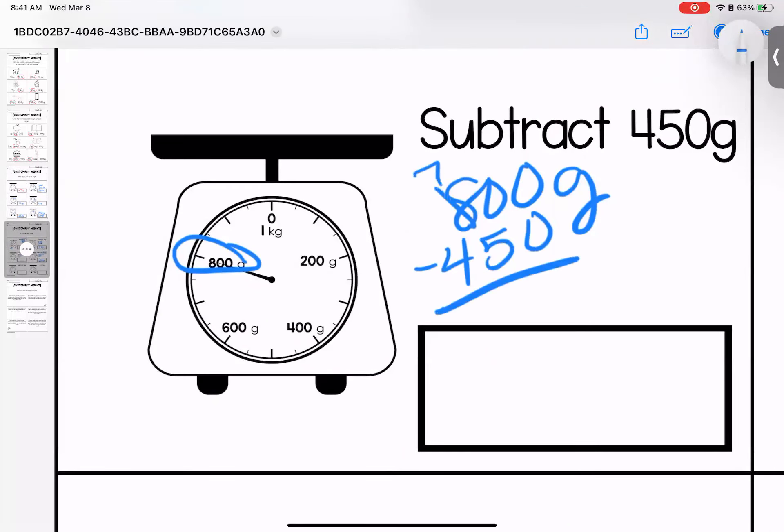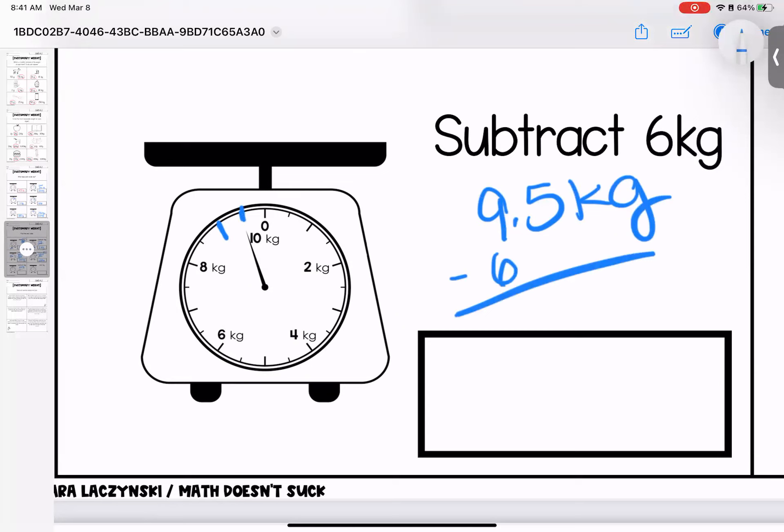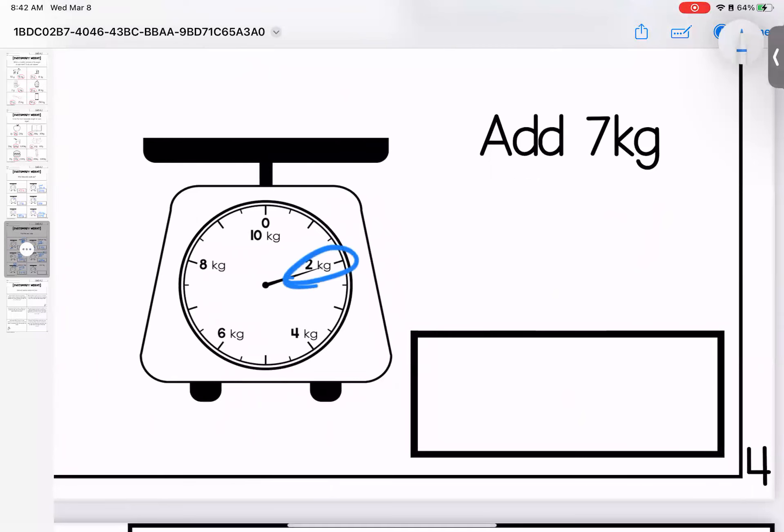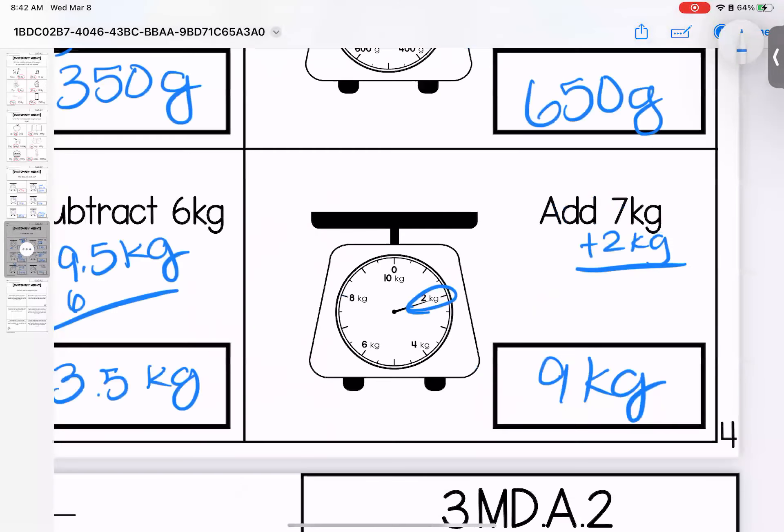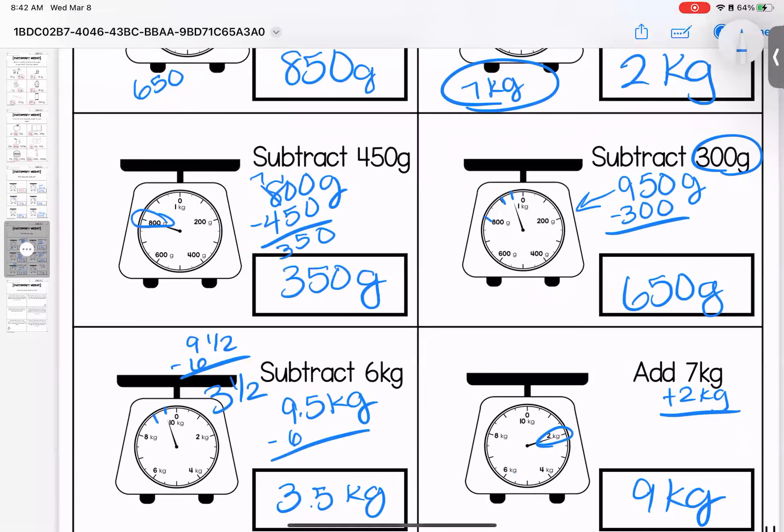We are at 9.5 kilograms. I need to subtract 6. This one was a little sticky because we had the half. If I subtract, I get 3.5 kilograms. You could also say it was 9.5 minus 6 leaves you 3.5. That one was a big stretch, love bugs. Over here, we're at 2 kilograms. I want to add 7. 7 plus 2 leaves me with 9 kilograms. Any questions on these, bring them with you to class.